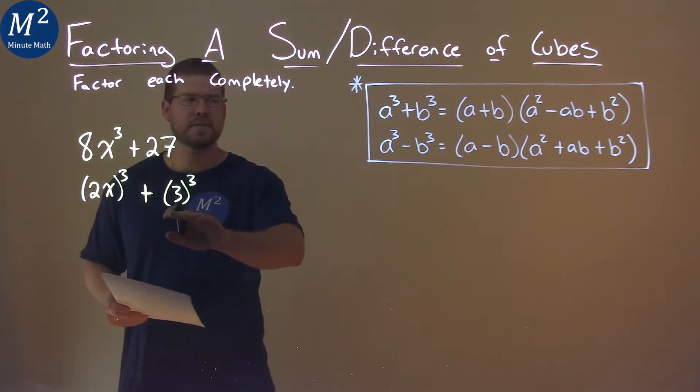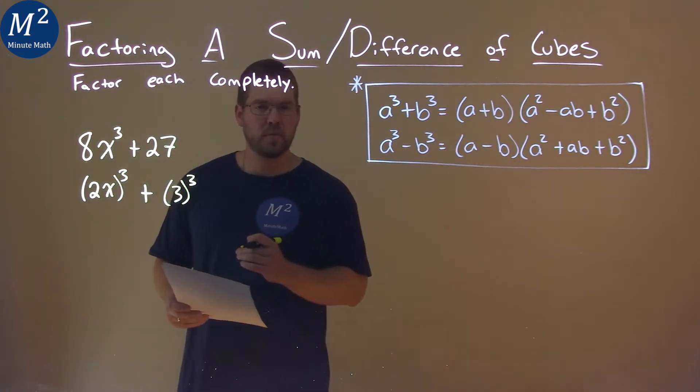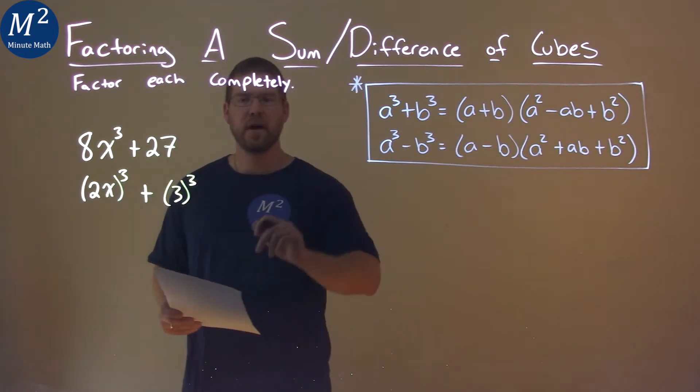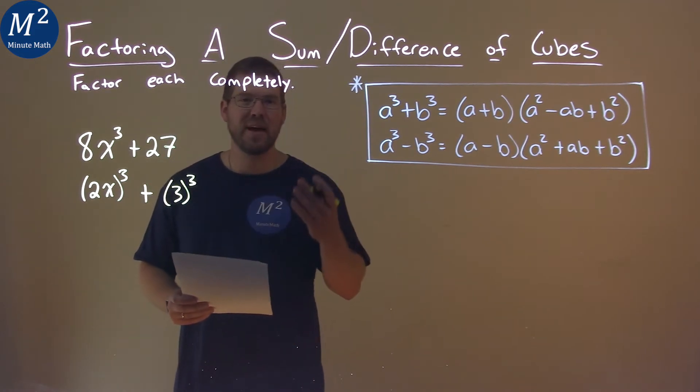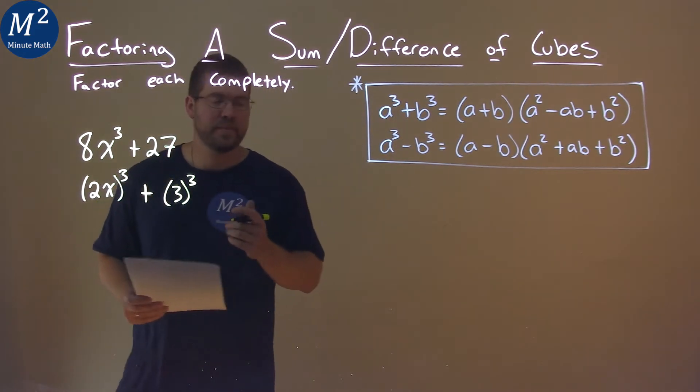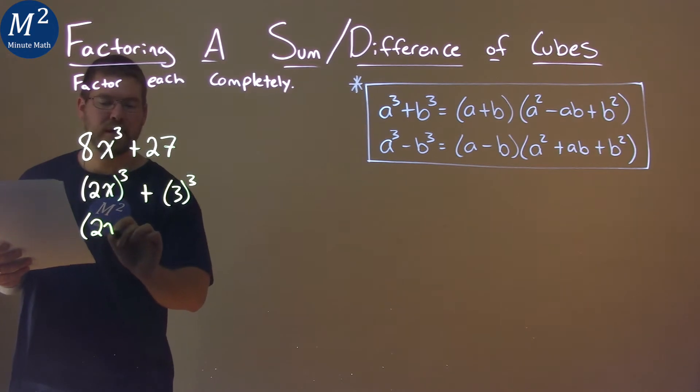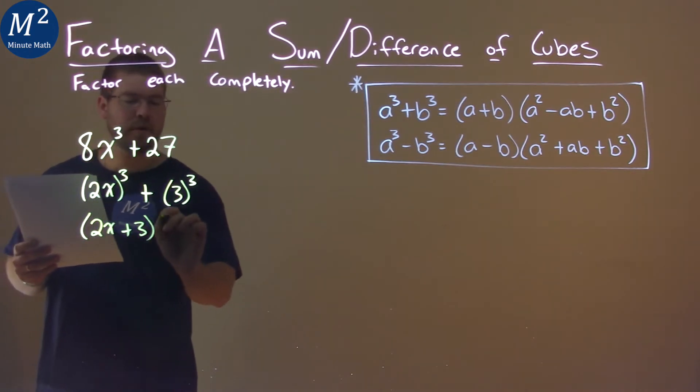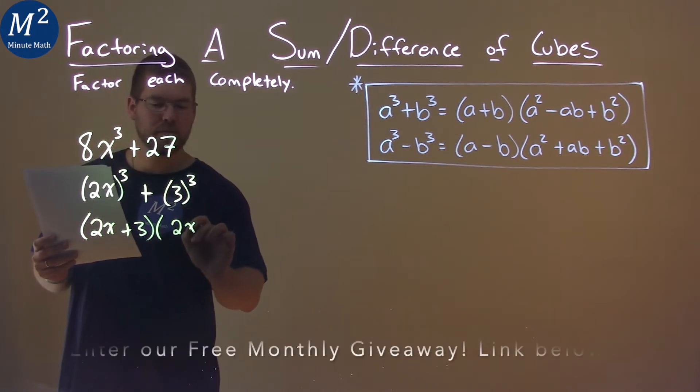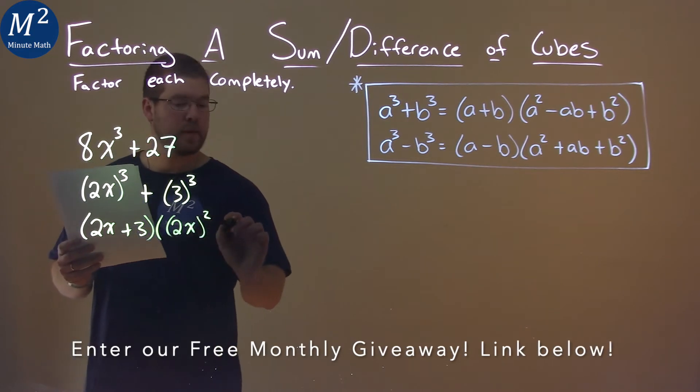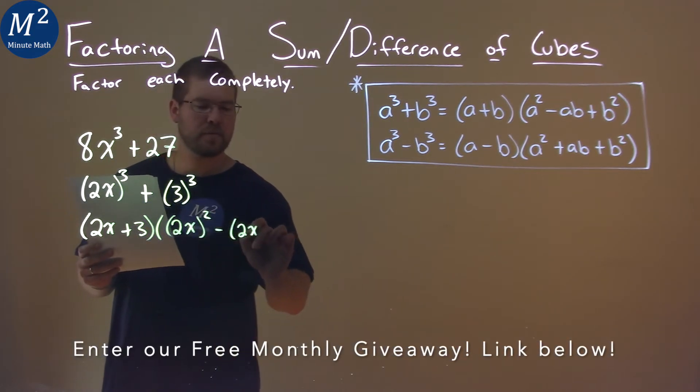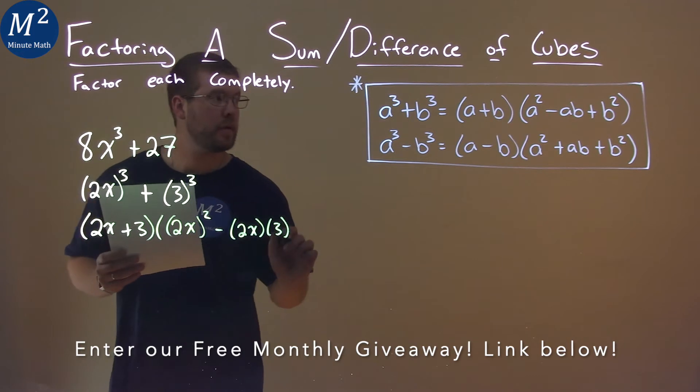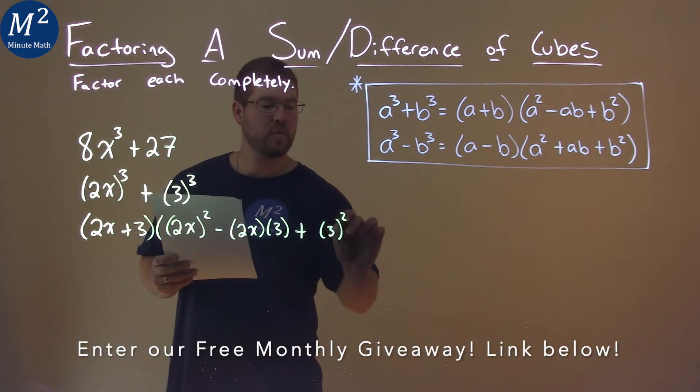And hopefully now you can see we match up with our sum of cubes formula. 2x is our a value and 3 is our b value. So now let's use our formula: 2x plus 3 in the first part, times 2x squared minus 2x times 3 plus 3 squared.